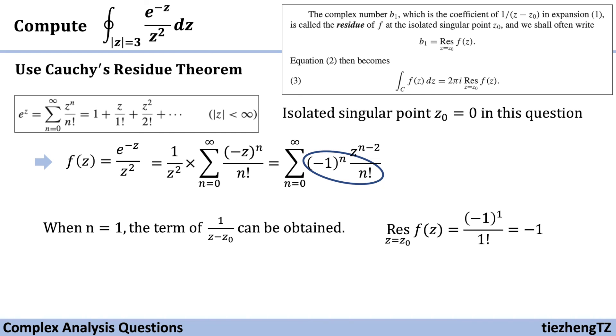Next, we substitute: the integral of e^(-z)/z² dz equals 2πi times the residue, which is -1. Therefore, the final answer is -2πi.